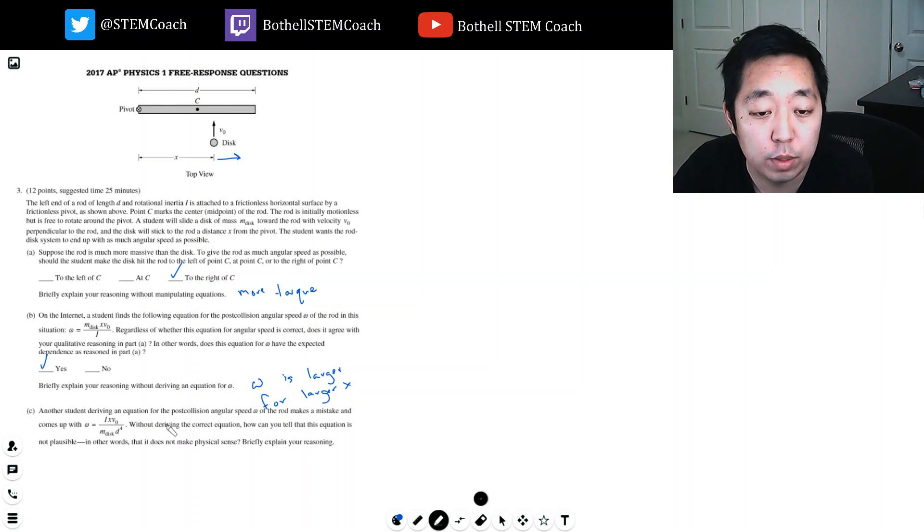Another student deriving equation for the post-collision angular speed omega of the rod makes a mistake and comes up with this. Without deriving the correct equation, how can you tell this equation is not plausible? In other words, that it does not make physical sense and explain your reasoning.